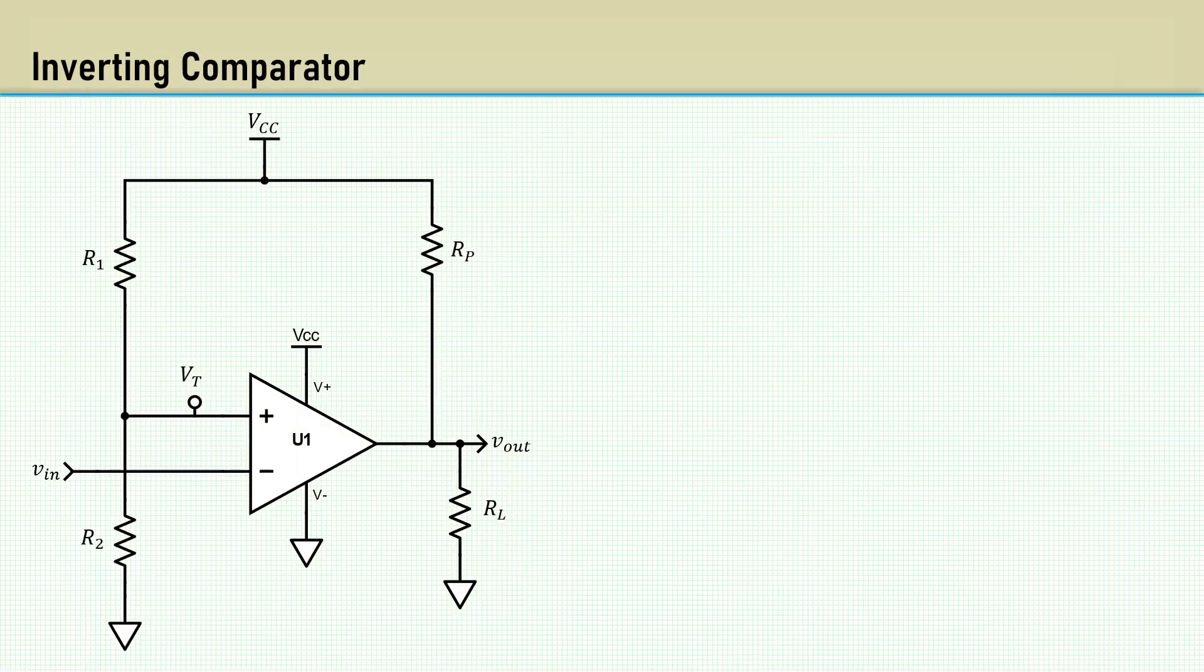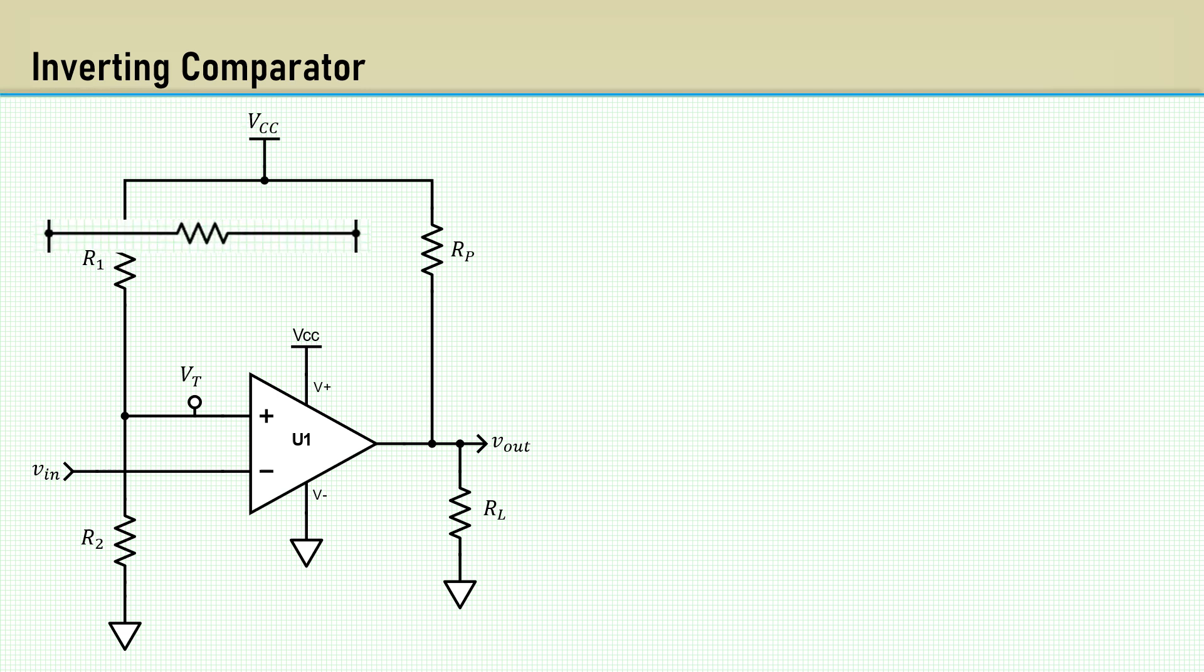Here is the general circuit for an inverting comparator. RP is the pull-up resistor and RL is the load, which is often a digital input to some logic system. R1 and R2 form a voltage divider to make the reference threshold voltage VT. To add hysteresis, the resistor RH is connected from the output to the non-inverting input, providing positive feedback.